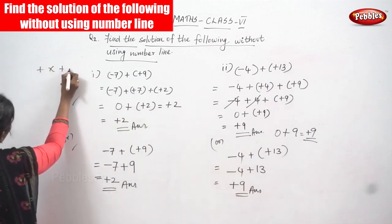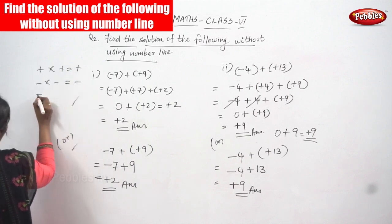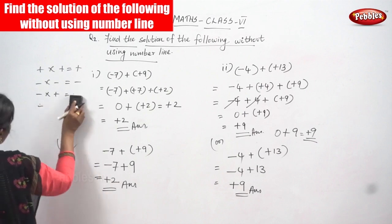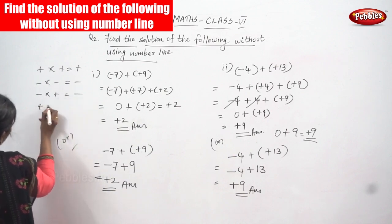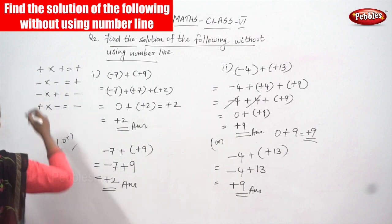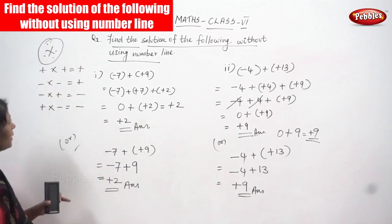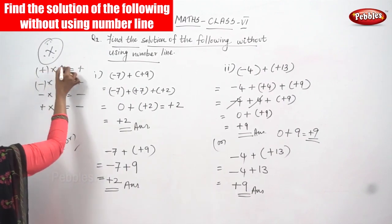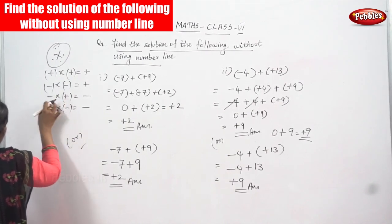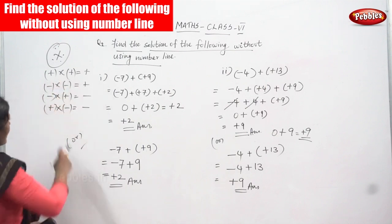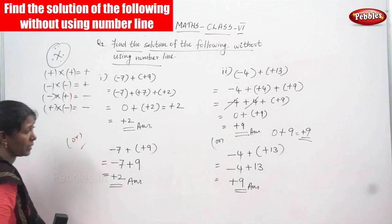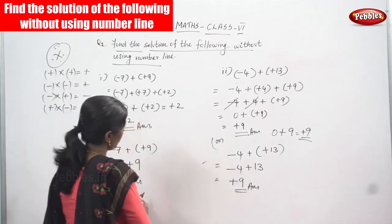You have to memorize these sign rules: plus into plus gives plus; minus into minus gives plus; minus into plus gives minus; plus into minus gives minus. This is the important sign formula — it is like a multiplication formula and you have to apply it here.